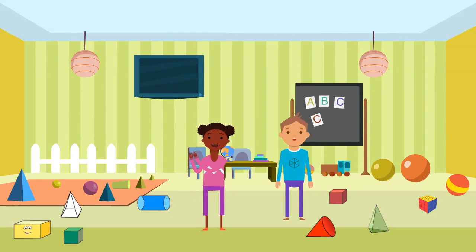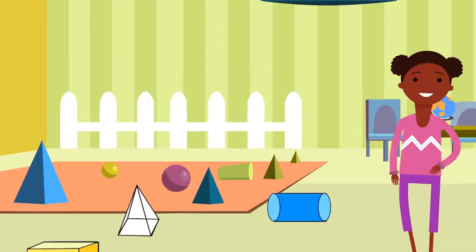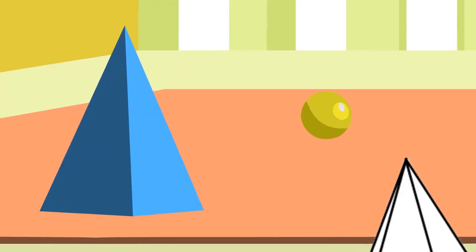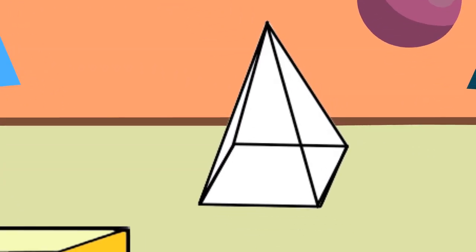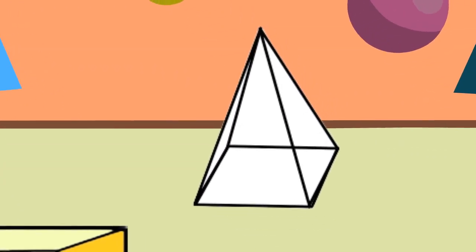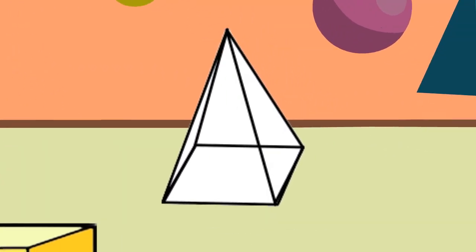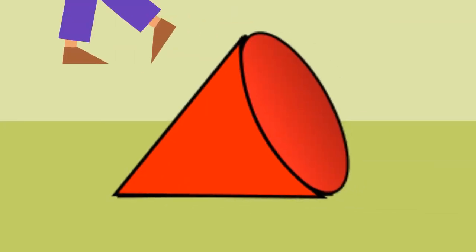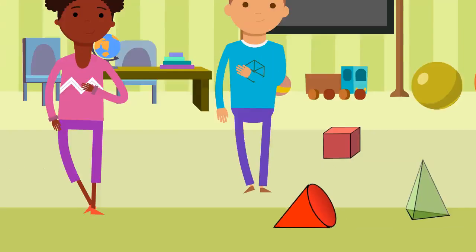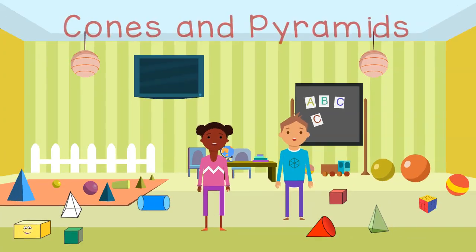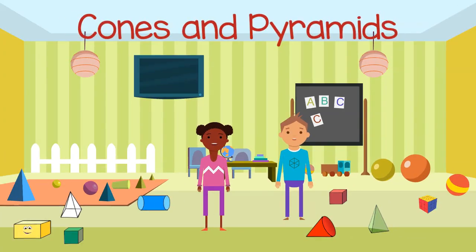Let's look for shapes with points. This shape is pointed. This shape is pointed. And this shape is pointed too. Cones and pyramids.